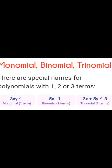Polynomials are divided by number of terms into monomial, binomial, and trinomial. If there is one term, it is a monomial; two terms is a binomial; and three terms is a trinomial.